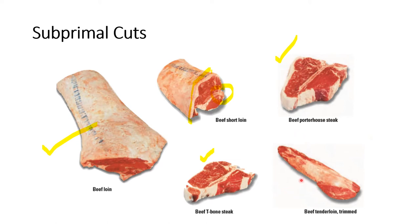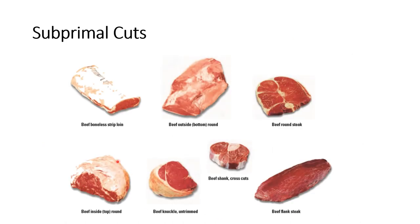The tenderloin is a layer below the sirloin and short loin. The boneless strip loin is the loin from which the tenderloin has been removed and de-boned. There is also the beef outside bottom round, beef round steak cut on the bone, the shank cross cut, the beef shank steak, and the beef knuckle untrimmed.